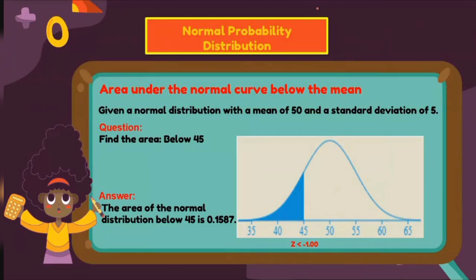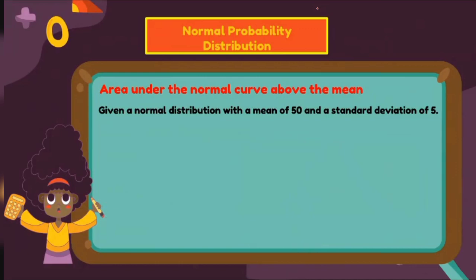This is our solution for getting the area under the normal curve below the given value. Now, what if you have a problem about the area under the normal curve above the mean? Consider the same distribution — mean of 50 and standard deviation of 5 — but this time, solve for the area above 53. In getting the area above the mean, we use the approach for getting the area to the right of the z-score.